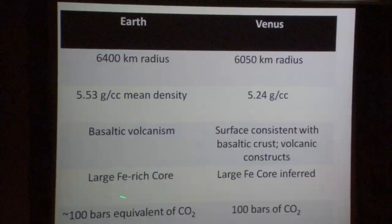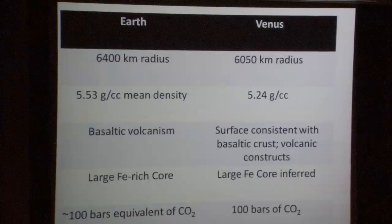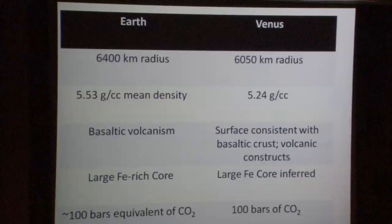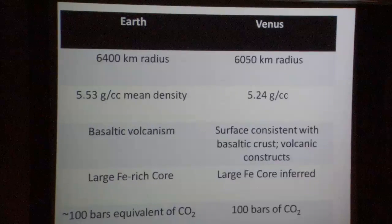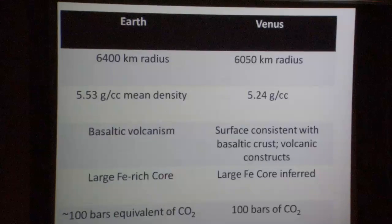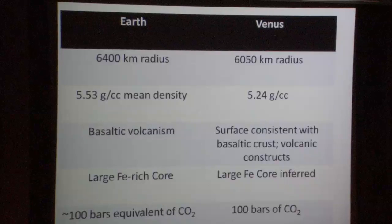Earth is known to have a large iron-rich core, about one-third of its mass. In the case of Venus, we think the structure is similar, although we don't actually know that. When I say inferred, I don't mean data directly point to this — rather, when thinking about how a planet like this should work given the observed mean density, it's hard to imagine any alternative to Venus having a large iron core.